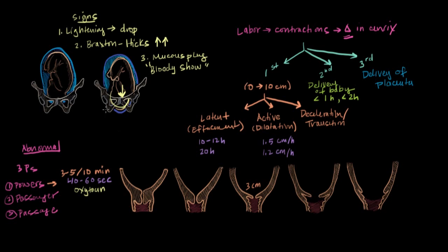If powers isn't the problem, then we need to consider the second P, passenger. The passenger is, of course, the fetus. Some things to consider about the fetus include what its orientation is, whether the head, the feet, or the shoulders are delivering first, because that can affect things. We have to consider whether the head is flexed or extended. And of course, how big the fetus's head is is also important to think about if you're having any abnormality in labor.